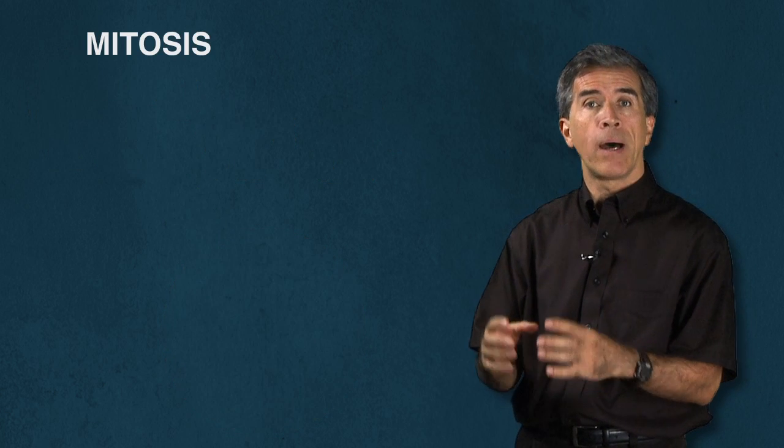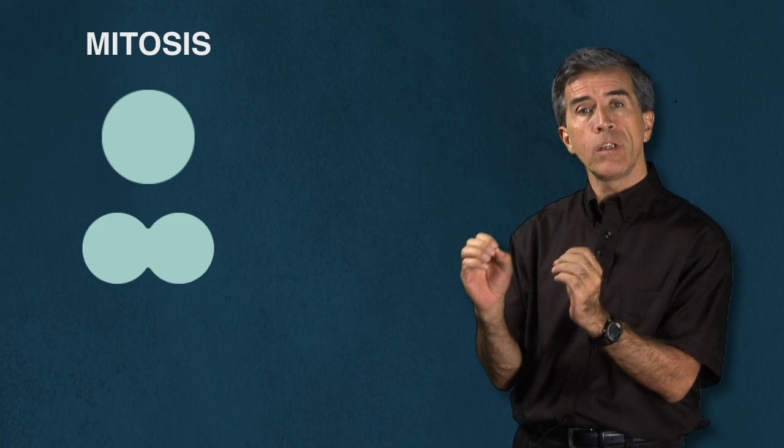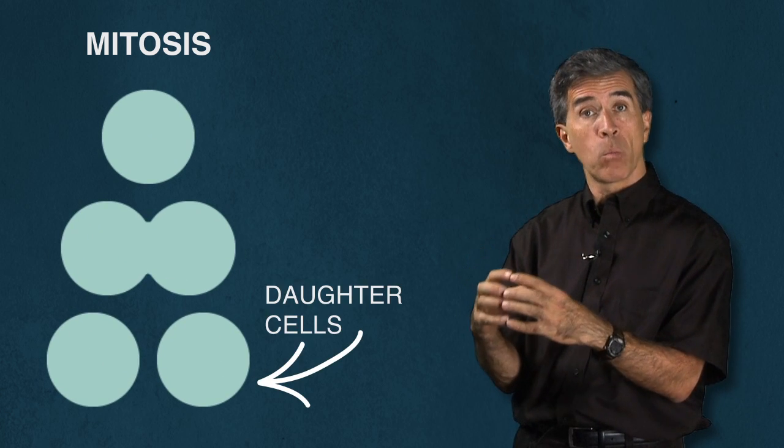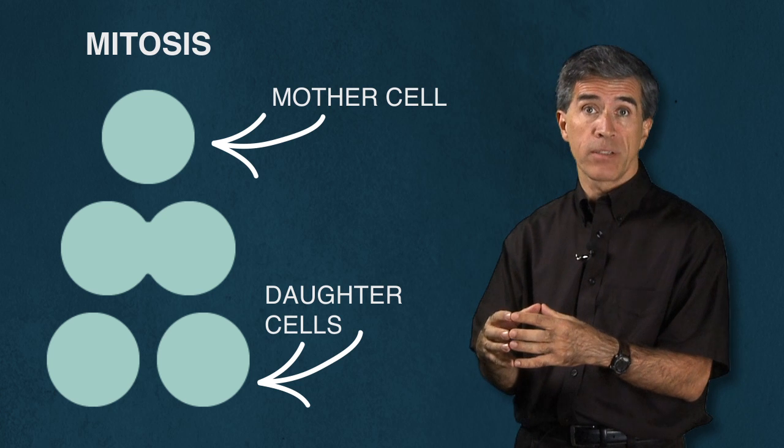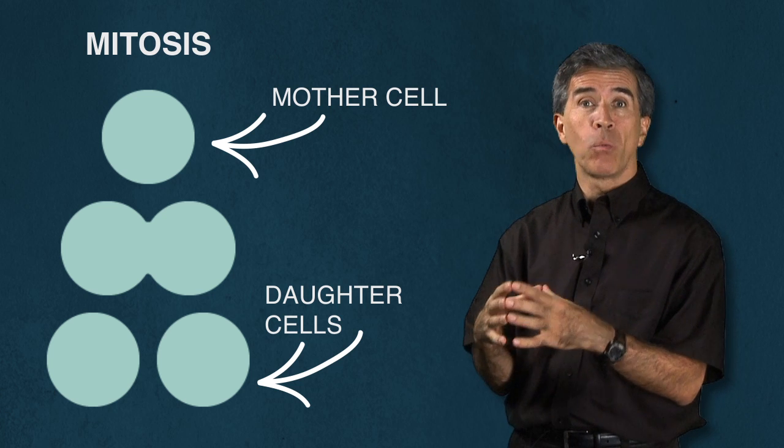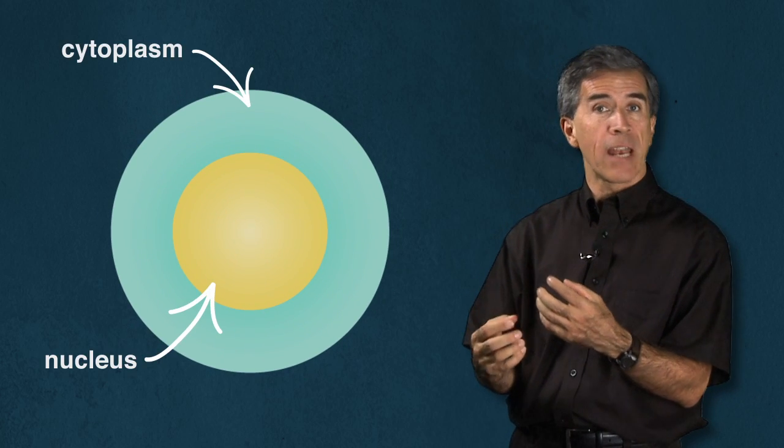The process of mitosis is a process whereby you generate two individual daughter cells from one single mother cell. This process is, if you will, one of the most dangerous times in the life of the cell because the chromosomes are going to have to be moved around inside the cytoplasm.